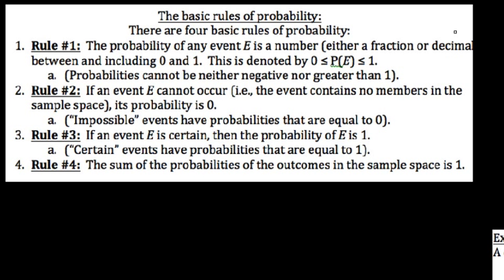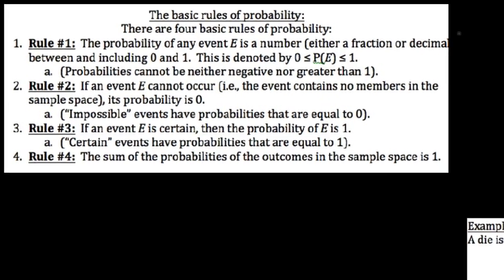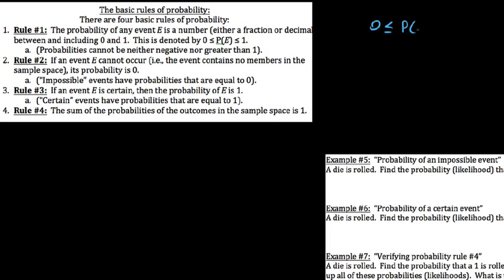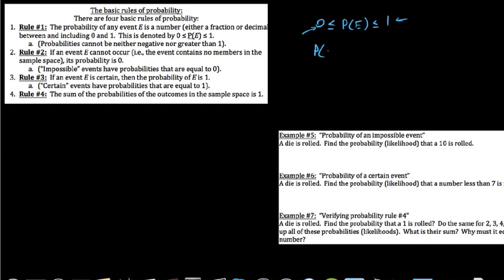Here are some basic rules of probability. Rule 1: probability of an event occurring is always between 0 and 1, where 0 would be impossible and 1 would be a certain event. Rule 2: if an event E cannot occur — it has nothing in the sample space, like rolling a 7 on a standard die — then the probability equals 0. Rule 3: if the probability of an event equals 1, it is a certain event — it has to happen 100% of the time. Rule 4: the sum of the probabilities of all outcomes in the sample space is 1.